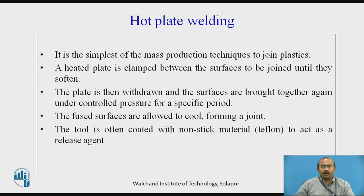We will see one of the subtypes — hot plate welding. It is the simplest of the mass production techniques to join plastics. A heated plate is clamped between the surfaces to be joined until they soften. The plate is then withdrawn and the surfaces are brought together again under controlled pressure for a specific period. The fused surfaces are allowed to cool, forming a joint. The tool is often coated with a non-stick material, for example Teflon, to act as a release agent.